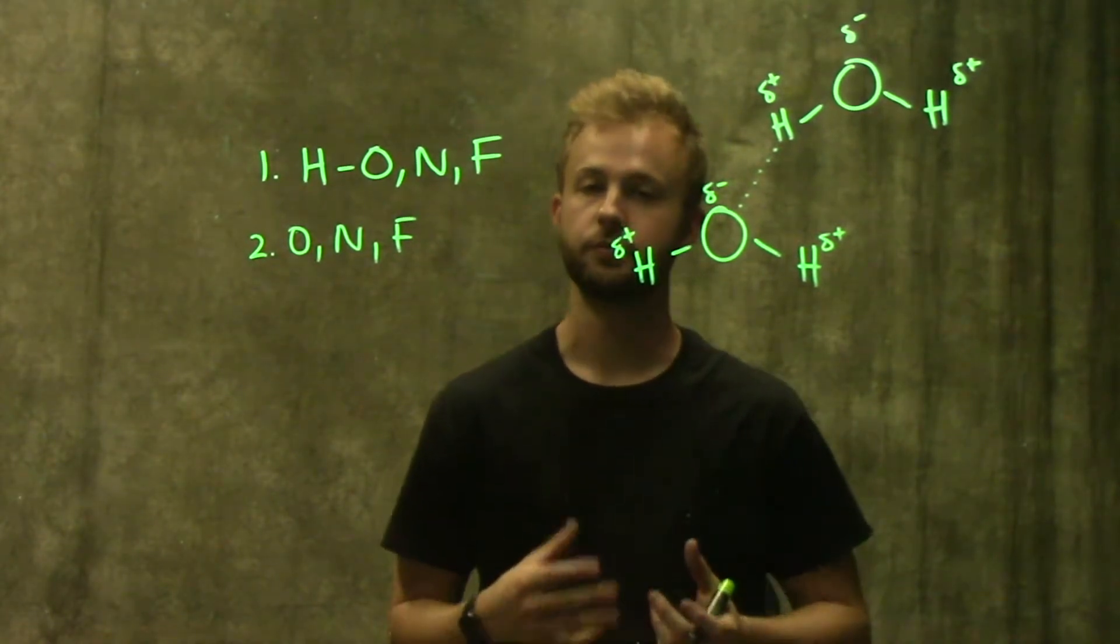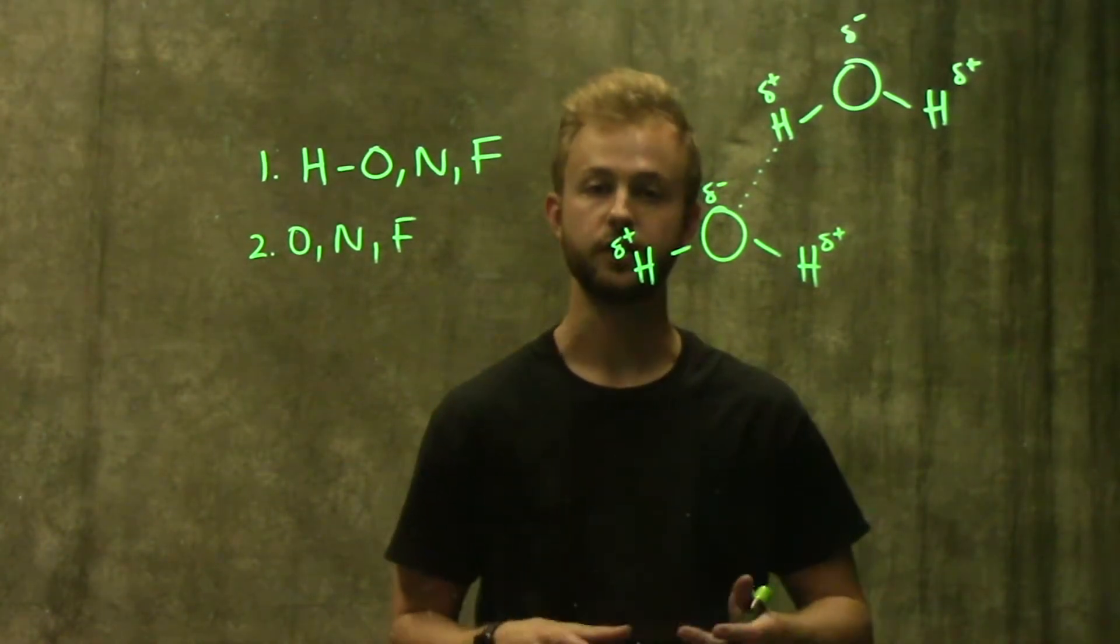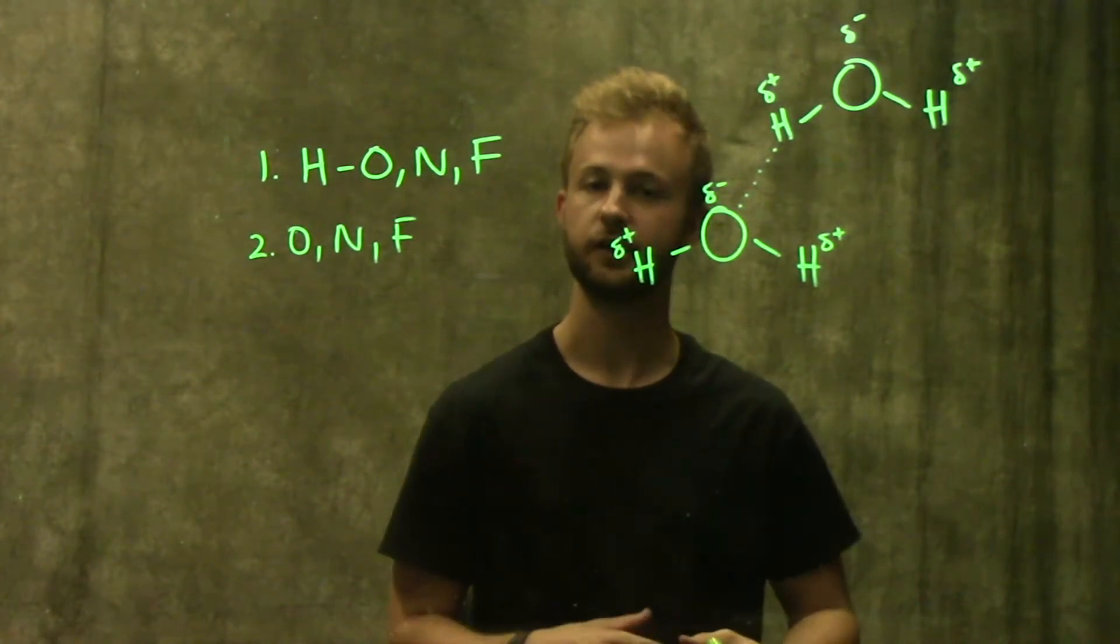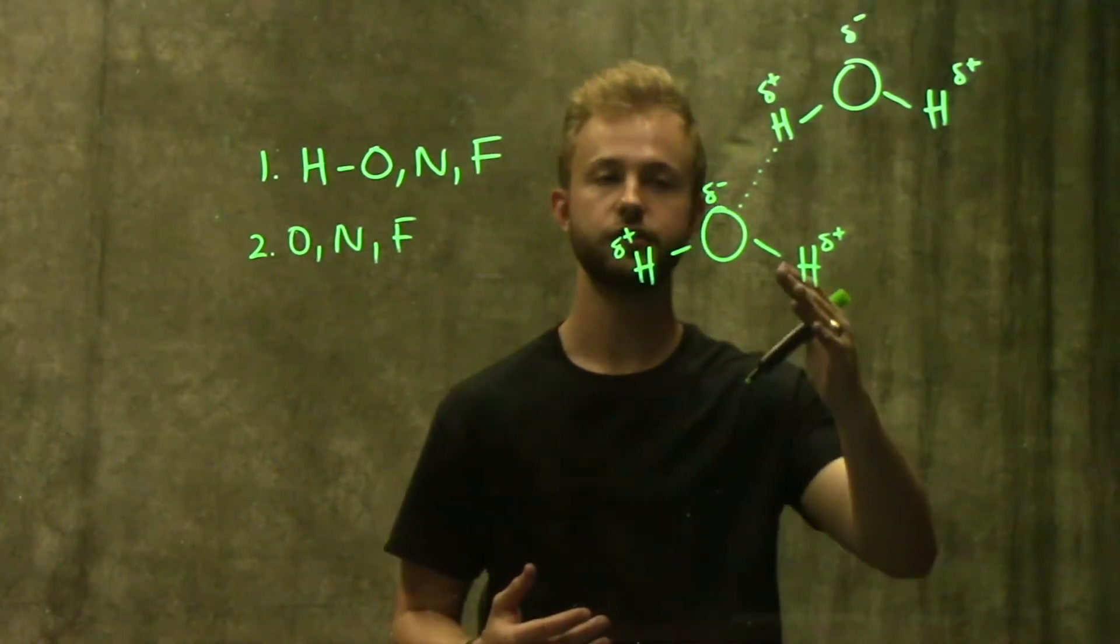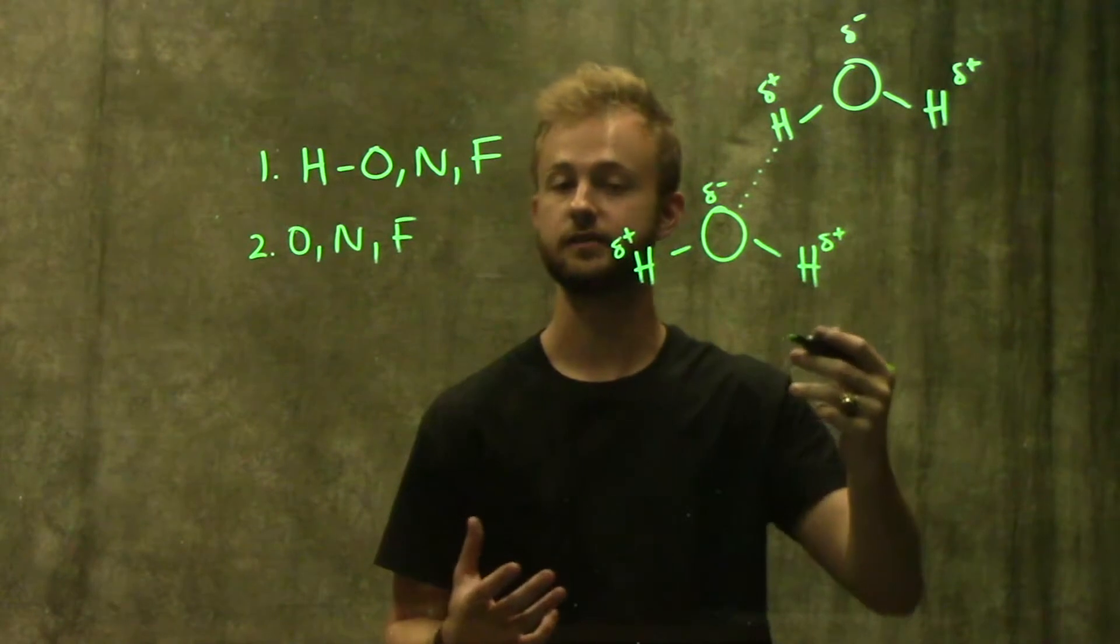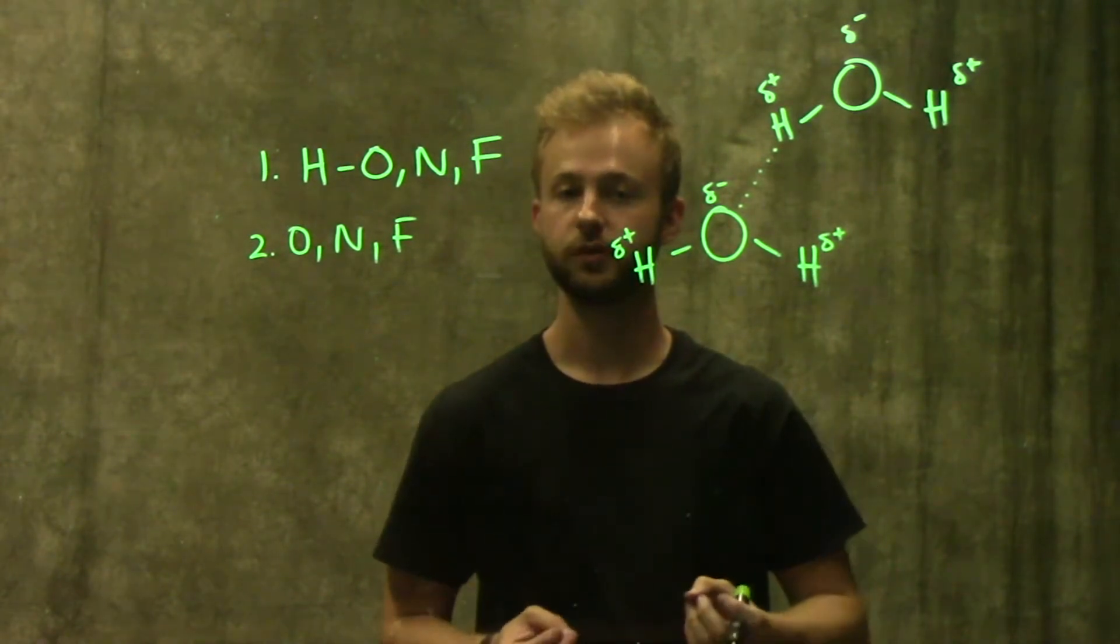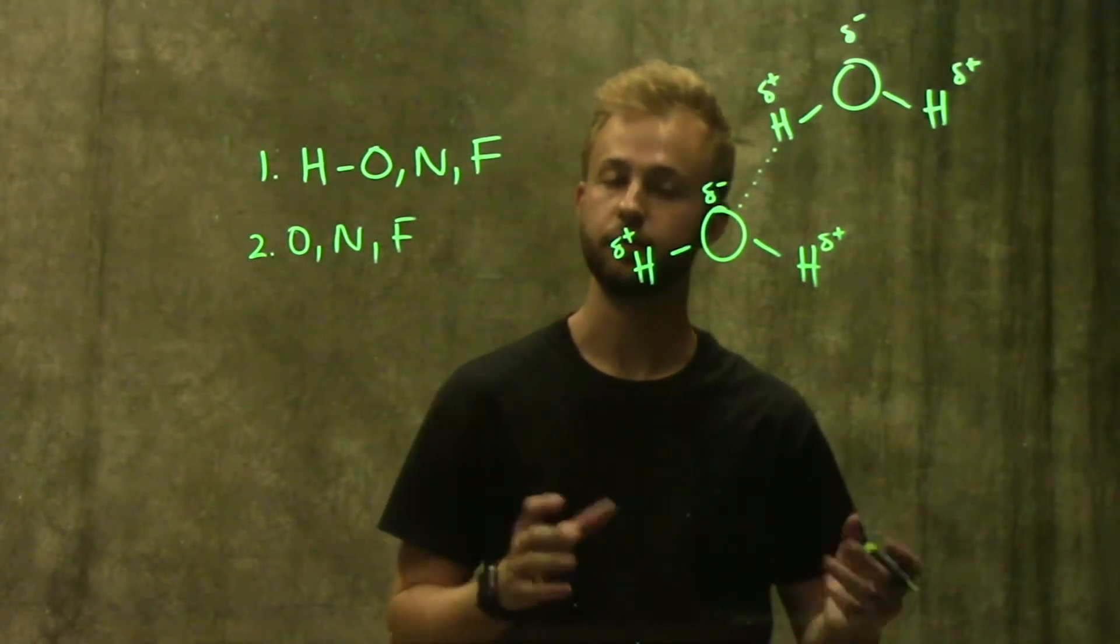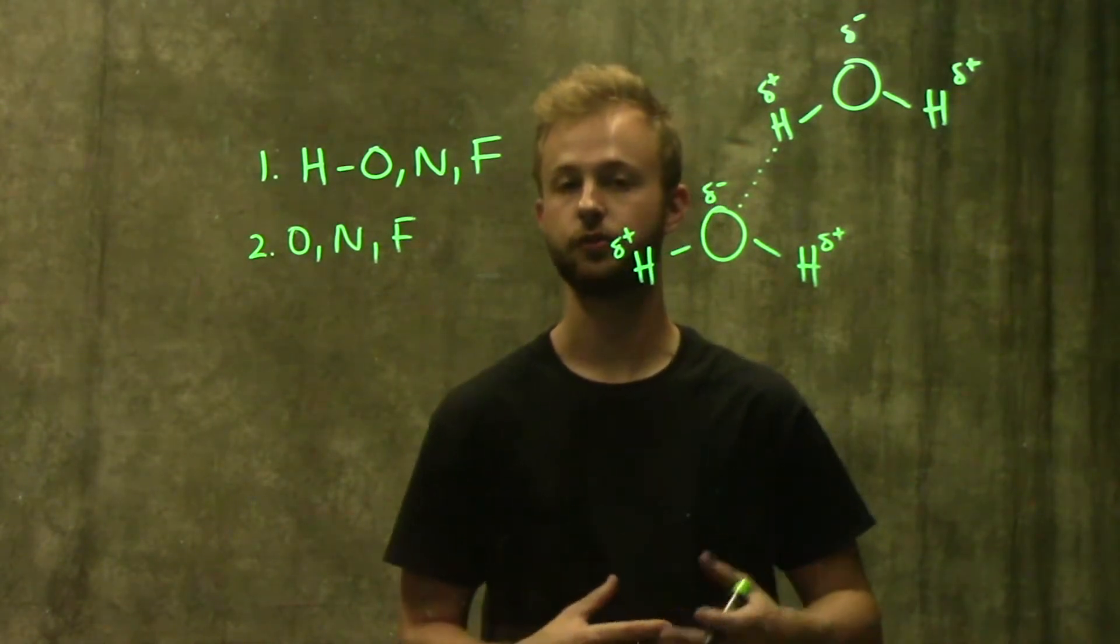Something that's super important to remember about hydrogen bonds is that they're very weak, so they're one of the weakest kinds of molecular interactions. Individually this bond is very easy to break, but when you have a large number of hydrogen bonds then that provides some stability for that molecule.